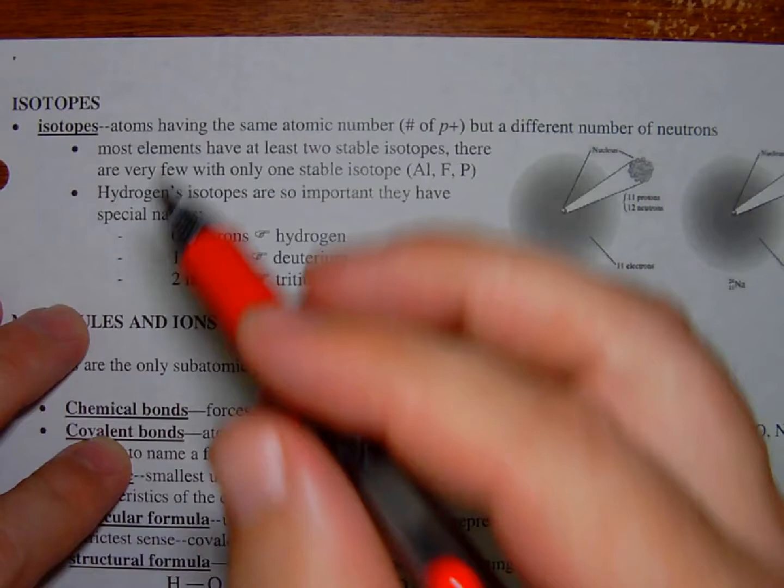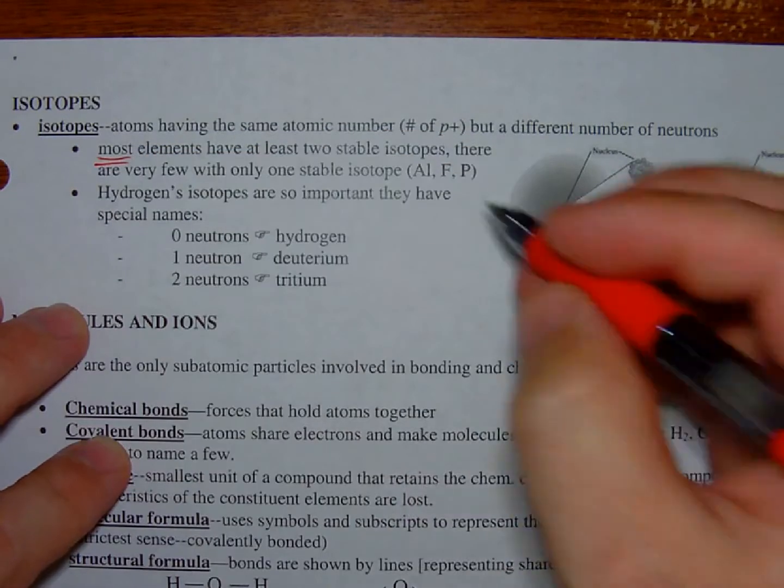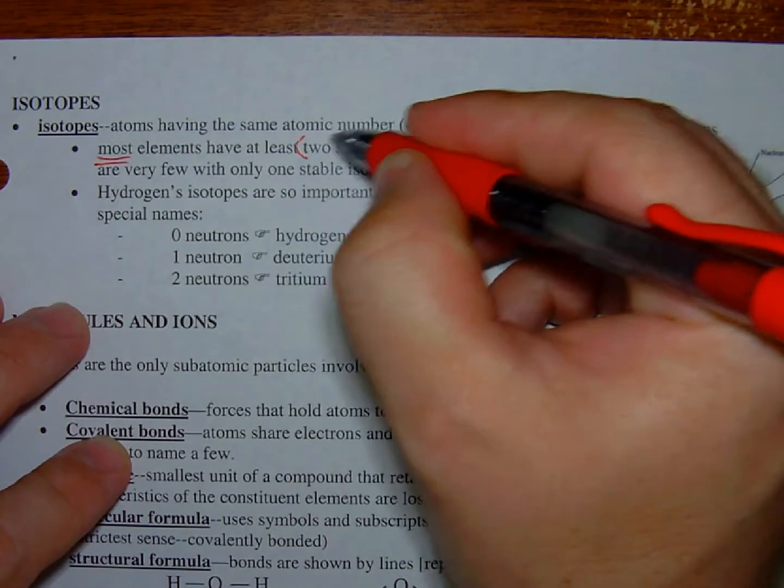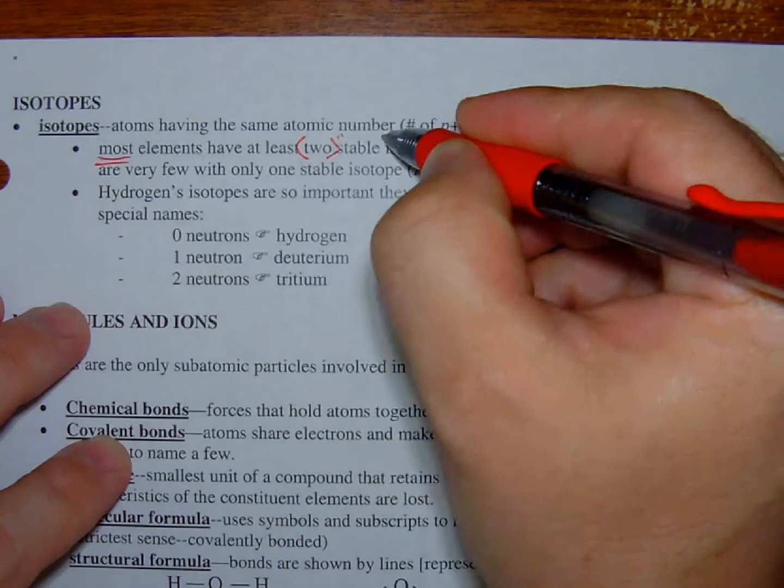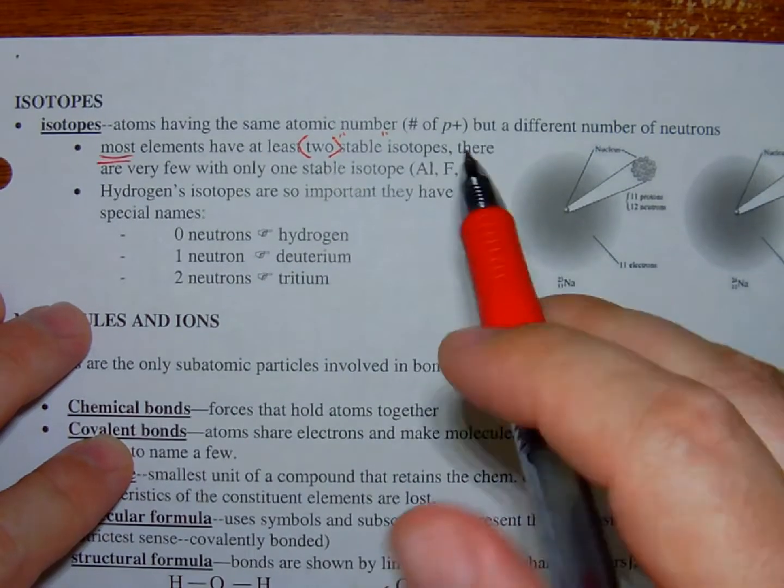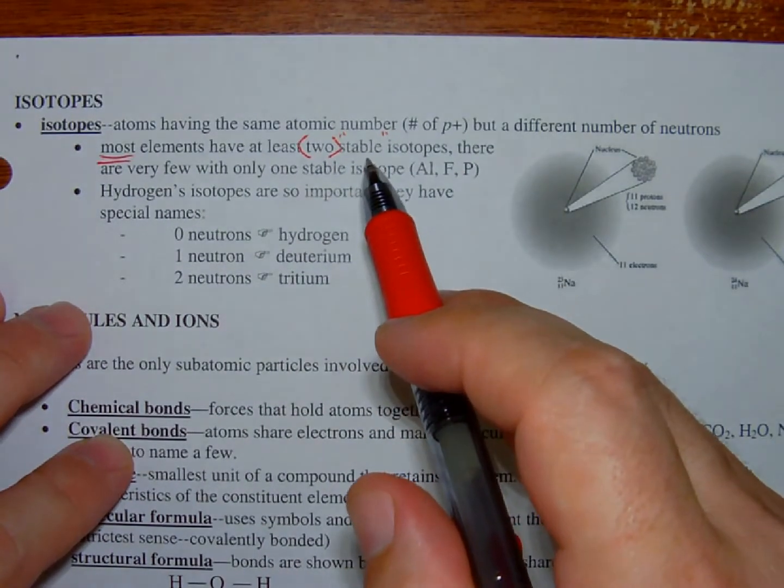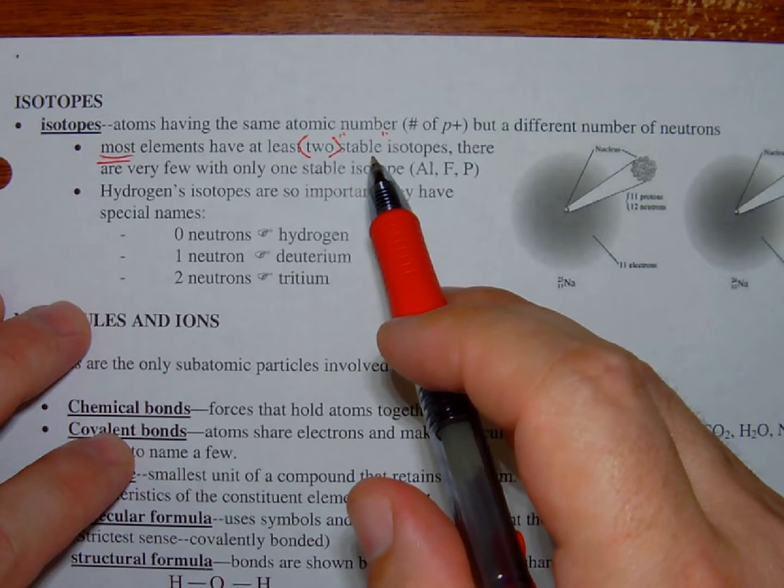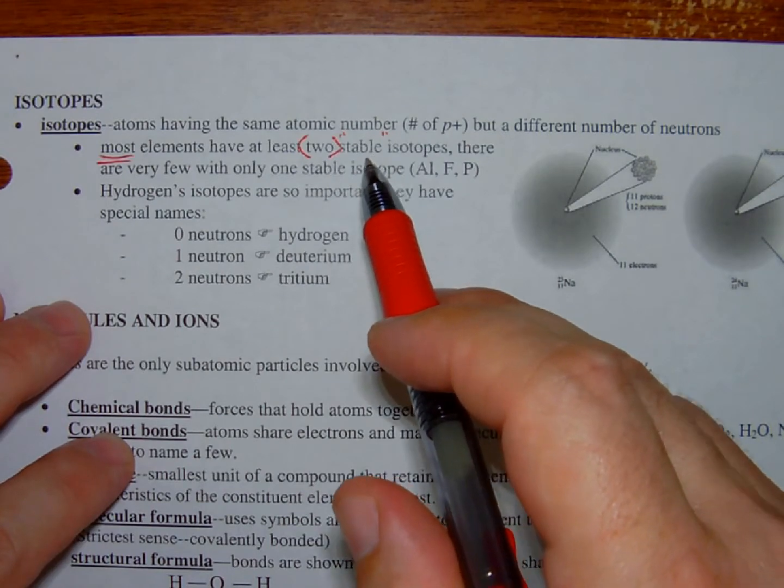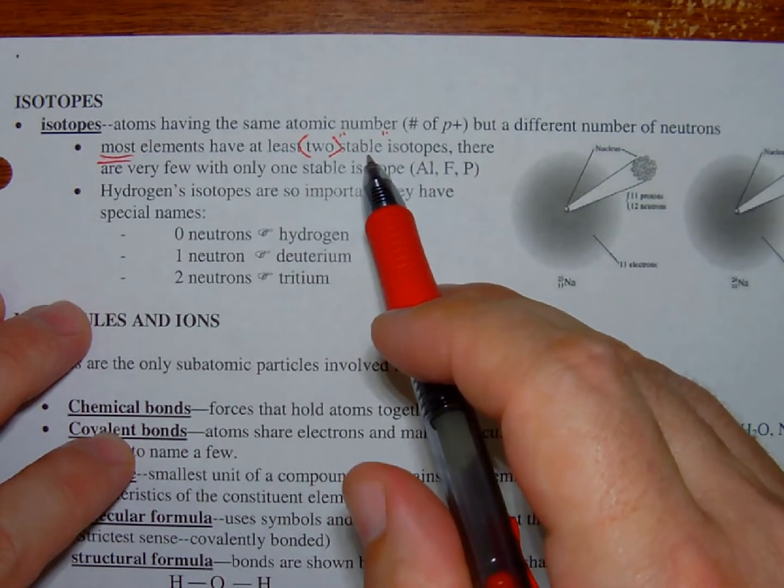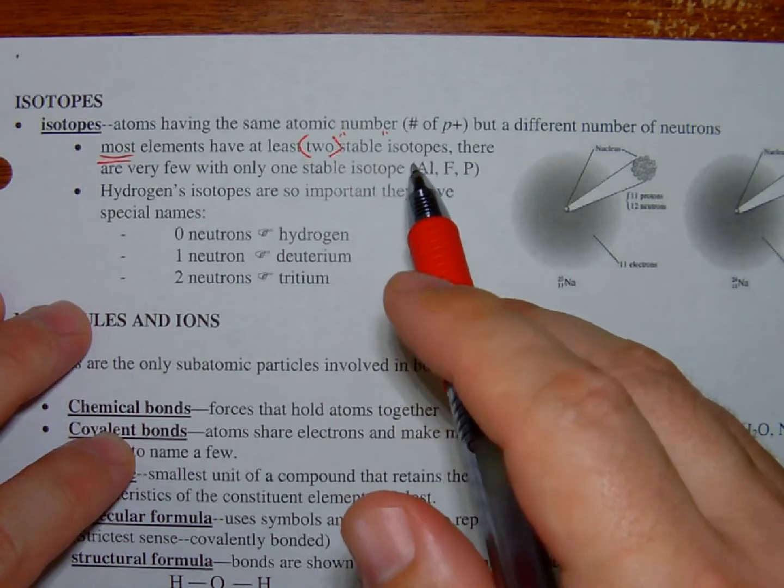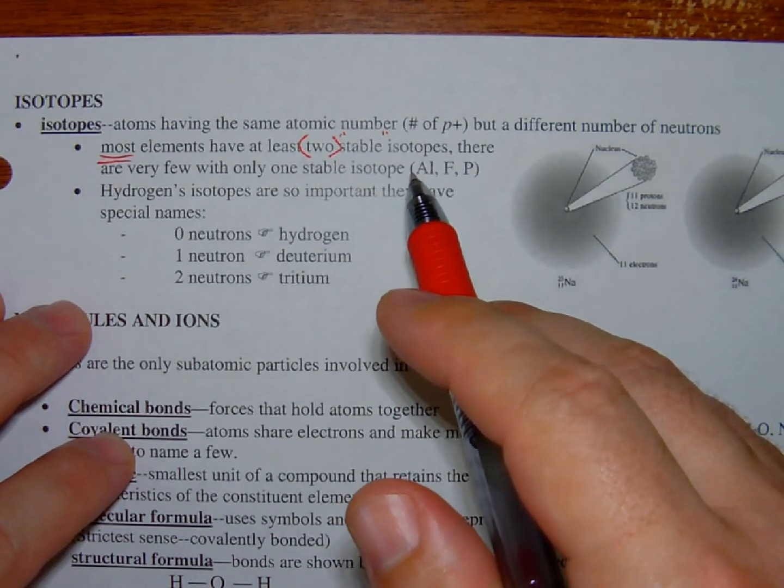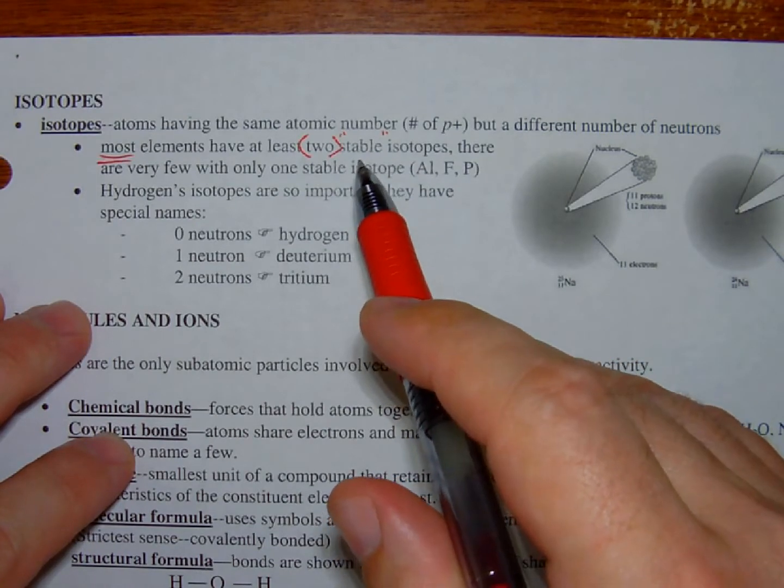Most elements, not all, have at least two stable isotopes. Now, the keyword here is stable, right? There are other isotopes that exist in the world. They just only exist for a split second and they'll decay into something else. So we're talking about stable isotopes. Most elements have at least two. It's not uncommon to have more than that, but most elements have at least two stable isotopes.